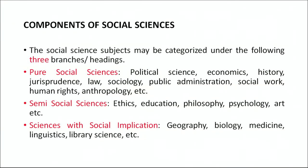Let us look into what are the components of social sciences. Social science subjects may be categorized under three main branches. The first one is pure social sciences. Examples of pure social sciences are political science, economics, history, jurisprudence, law, sociology, public administration, social work, human rights, anthropology, etc. These are purely social sciences mainly related with human beings and human affairs.